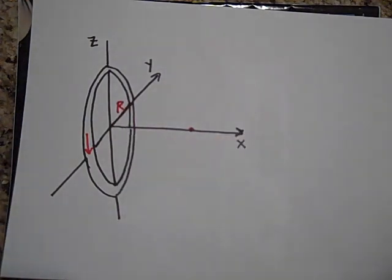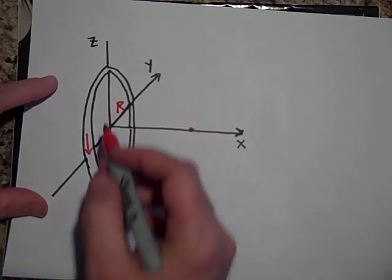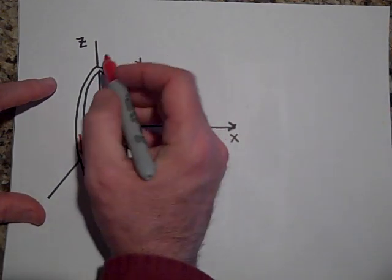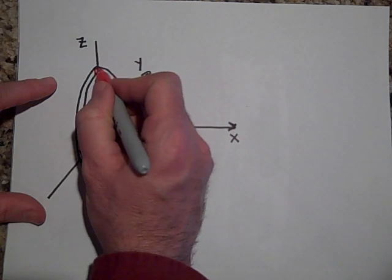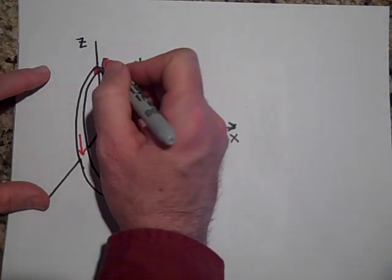Okay, so what we do is we use the law of Biot-Savart. We're going to break this into... let's just analyze one little segment of this. A little segment DL.